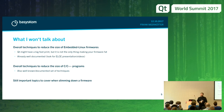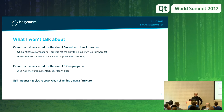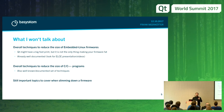A short disclaimer on what I won't talk about: I won't talk about overall techniques to reduce the size of embedded Linux firmwares — this is already well documented. There are good presentations from the Linux Foundation and from the European Embedded Linux Conference. Qt might often be a big part of a firmware, but it's not necessarily the only thing making your firmware fat. I also won't talk about general-purpose techniques to reduce the size of your C or C++ program — I really want to focus on Qt.